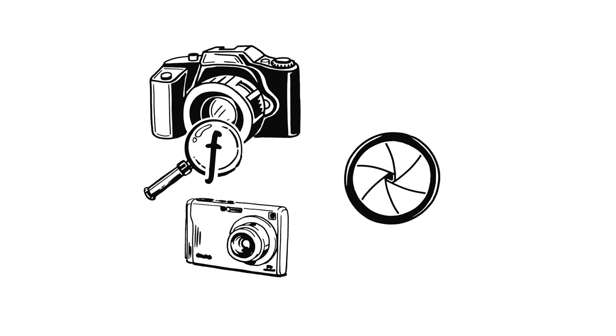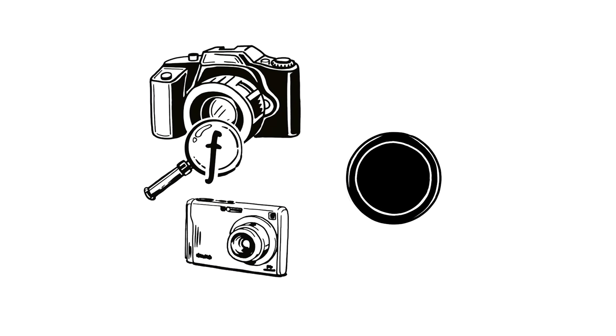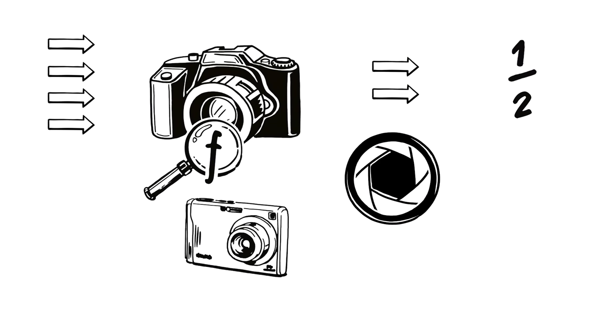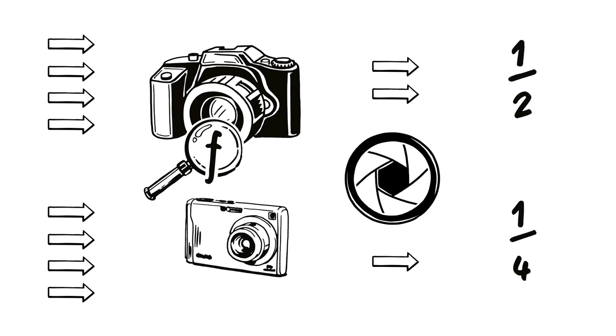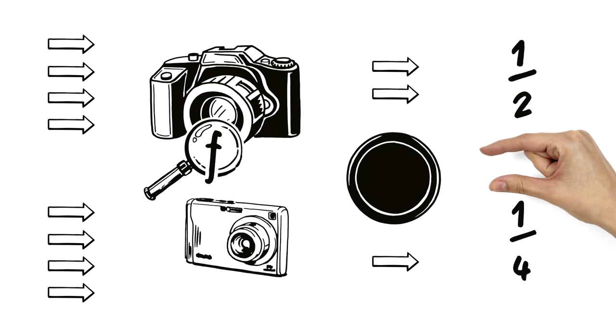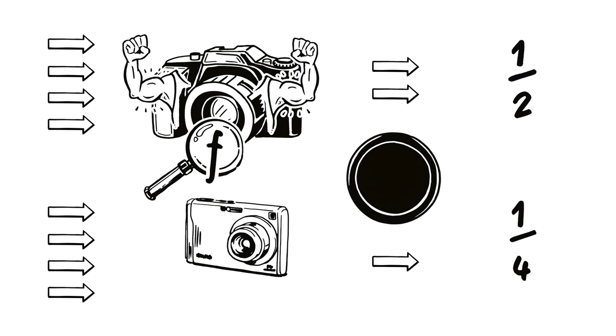At F2, only halfway. At F4, only a quarter of the way. So, the lower the number, the more light can pass through a particular lens.